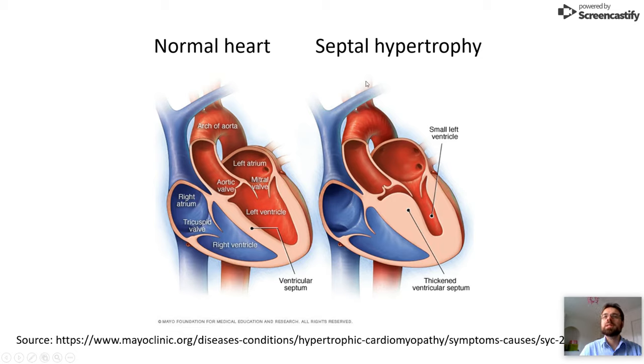That septum in septal hypertrophy or hypertrophic cardiomyopathy thickens asymmetrically. The left ventricle wall does not thicken or the chamber does not dilate, thus the left ventricle is narrowing in this case.